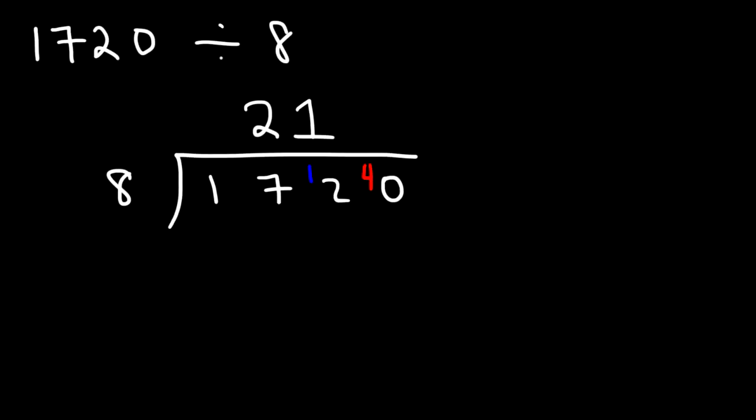So how many times does 8 go into 40? 8 goes into 40 five times and it's exactly five times. So this is your final answer. Therefore 1720 divided by 8 is 215. And so that's the basic idea behind short division.